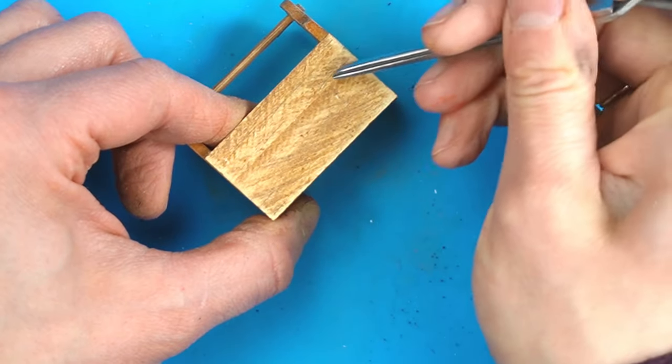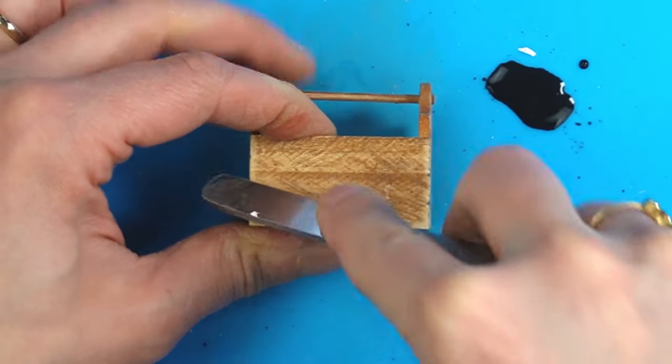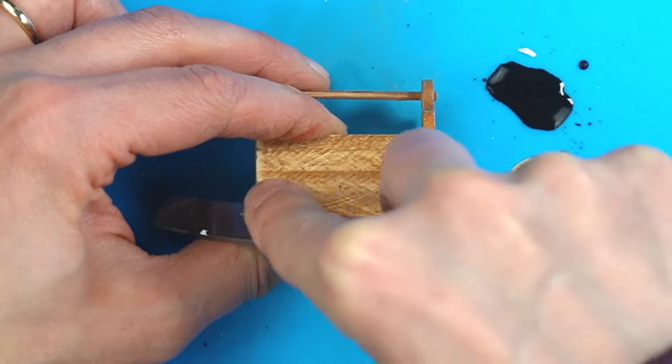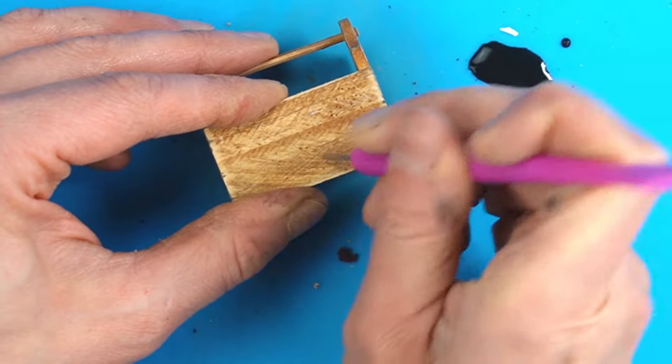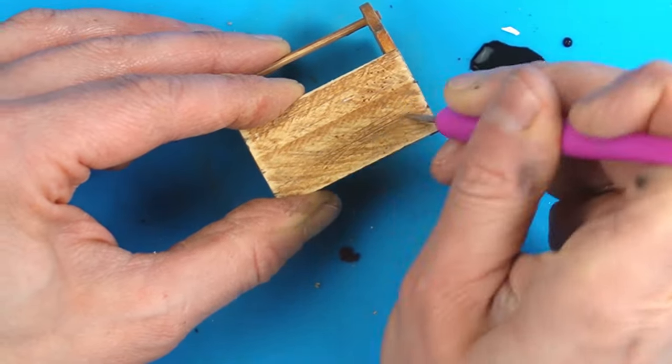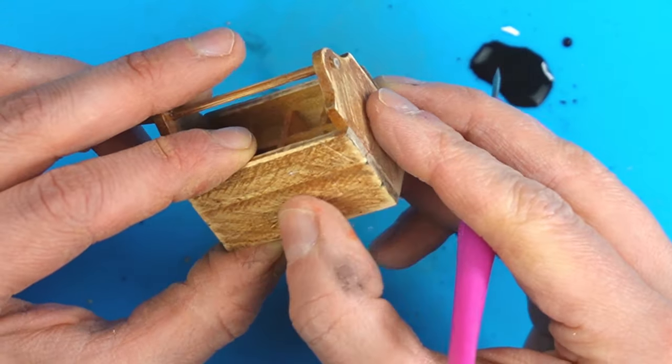One of my favorite steps when it comes to aging wood is using some tools I have on hand to create some gouges and damage. For this piece I used my tweezers and a needle tool I got at the Dollar Tree.